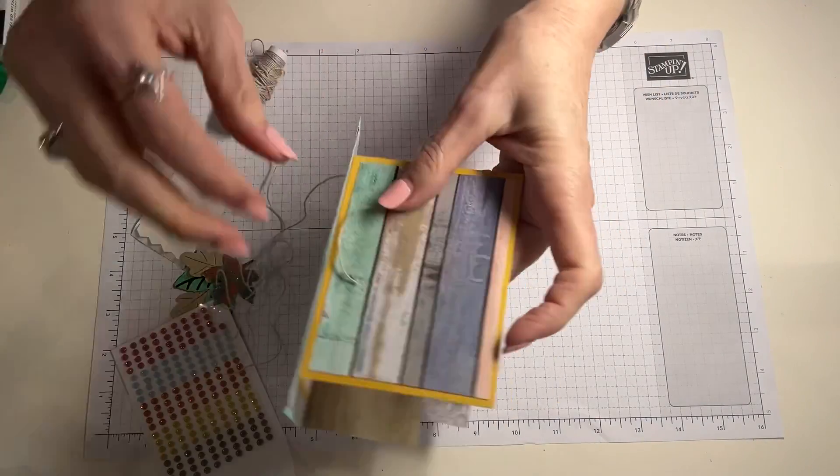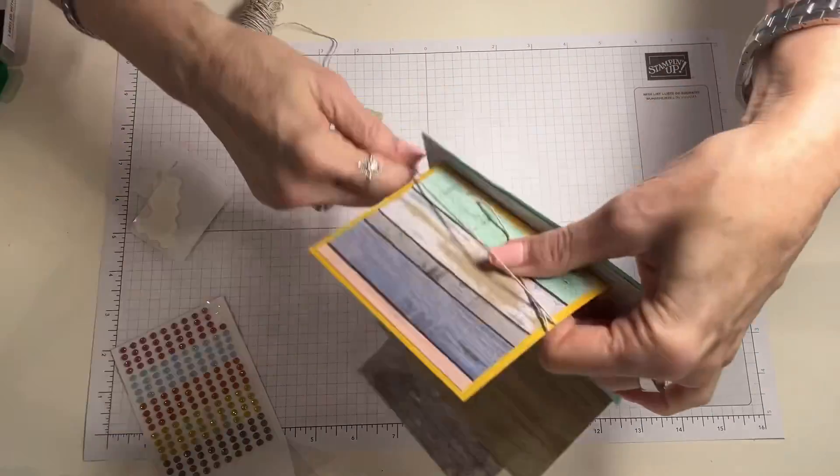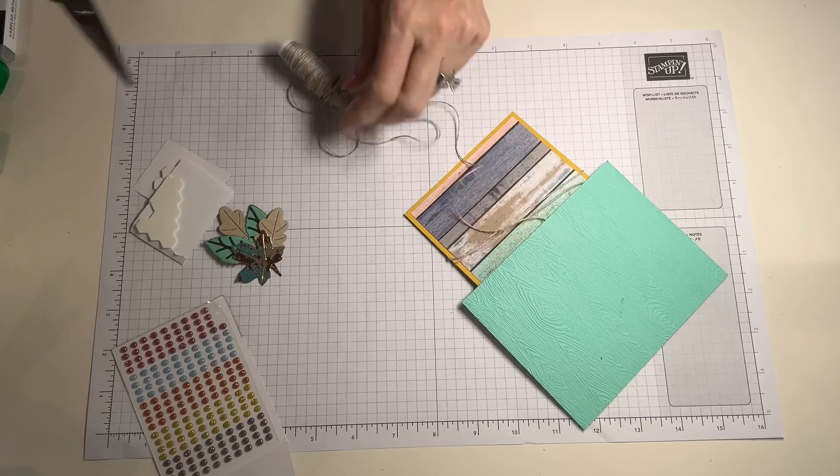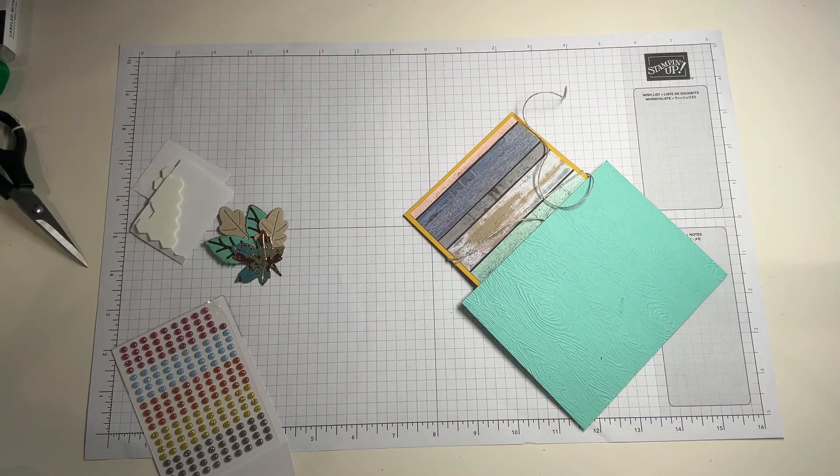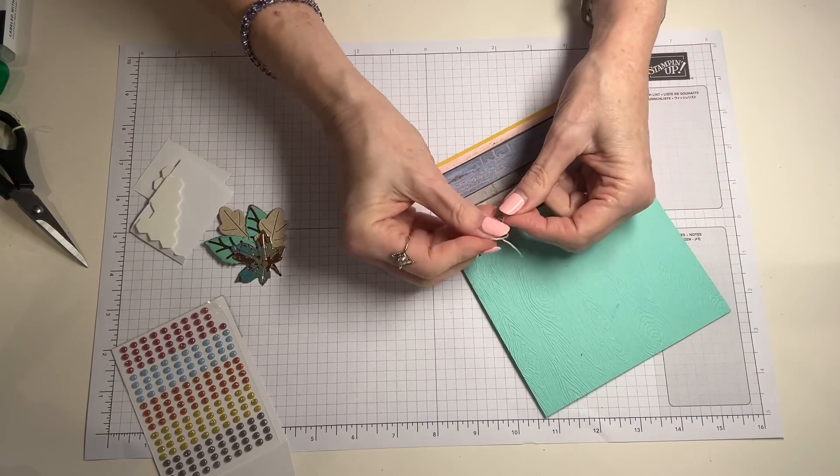Let's add some twine to our mini card. I'm going to just wrap it twice, leave a little extra and we're just going to tie a little knot. How cute is this going to be? So cute.